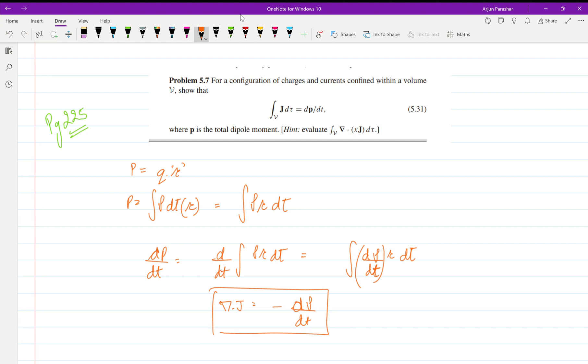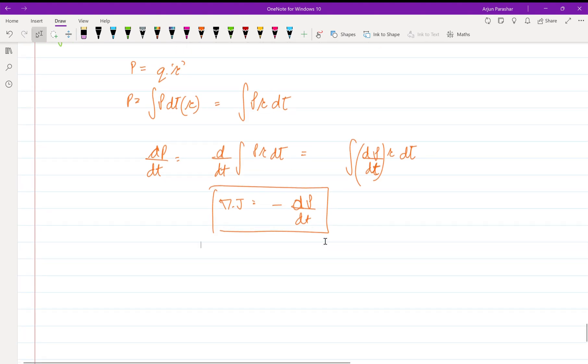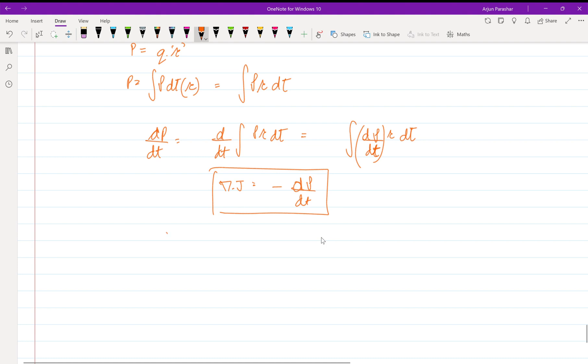Now putting the values, integration becomes del dot j into r d tau, which is equal to dp by dt, where p is the dipole moment.